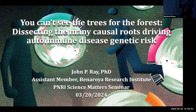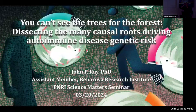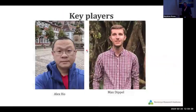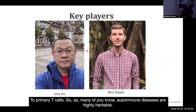I am traditionally an immunologist, but I have been switching into a functional genomics person for the past seven years. I have this cryptic title: 'you can't see the trees for the forest' — a play on 'you can't see the forest for the trees' — because autoimmunity is really this complex thing where the disease is present but what are the causal roots? The major players for this talk are Alex Ho, a postdoc in my lab, and Max Dippel, a technician who did a lot of the analysis. Today I'm going to talk about some previously published work and also what we've done recently to extend that to primary T cells.